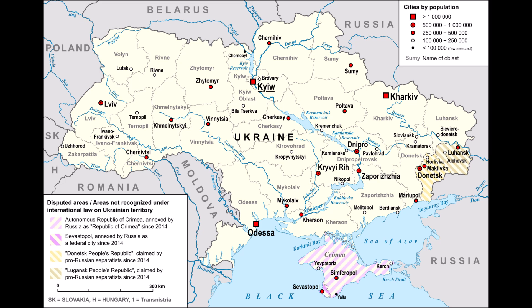The animated map that follows shows the daily progress of the 2022 Russian invasion of Ukraine as reported on Wikimedia Commons each day from February 24, 2022 through December 30, 2023.